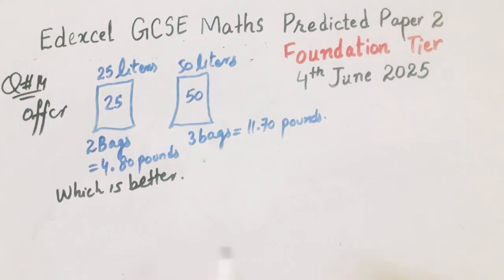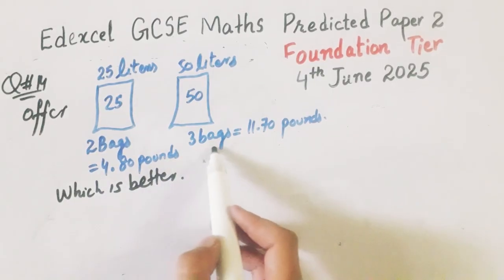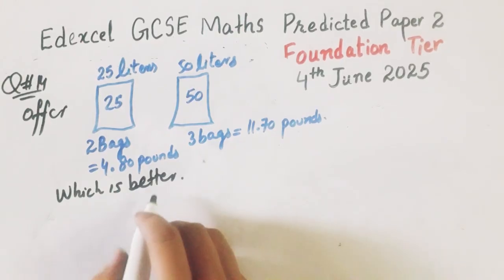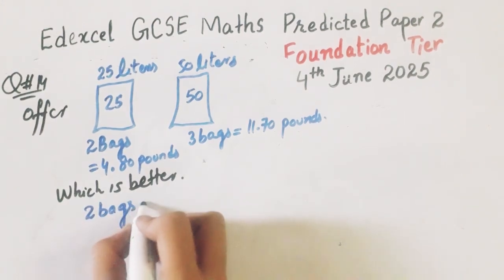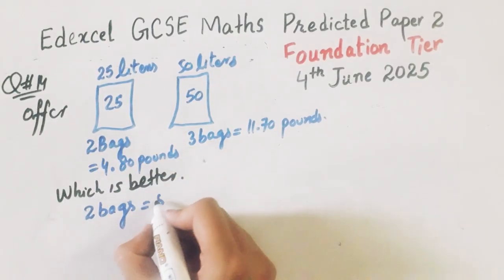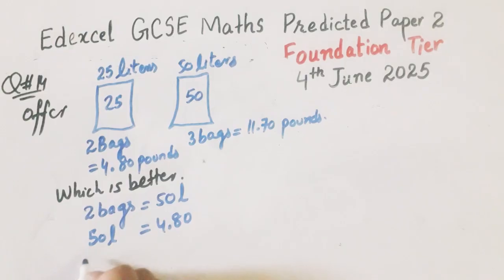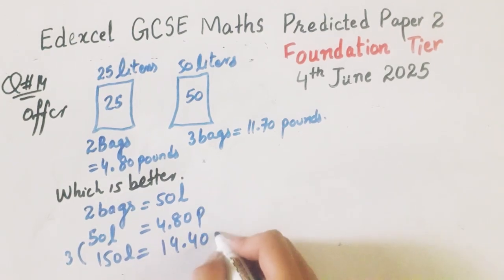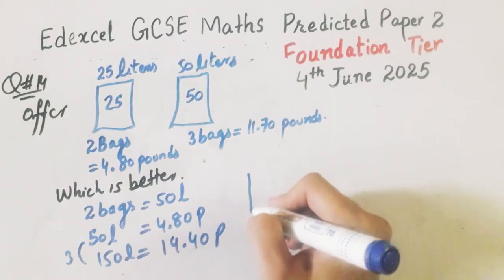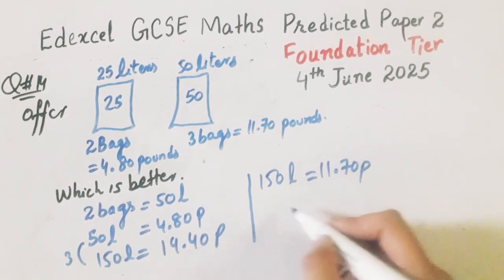In question number 14, an offer is given: for 25-liter bags, 2 bags are 4.80 pounds and 3 bags are 11.70 pounds. You have to find which offer is better. For the first offer: 2 bags equal 50 liters at 4.80 pounds. Multiply by 3: that gives 150 liters at 4.80 multiply by 3 equal to 14.40 pounds. For the second offer: 3 bags means 150 liters at 11.70 pounds. So the second offer is better because the first one is more expensive.